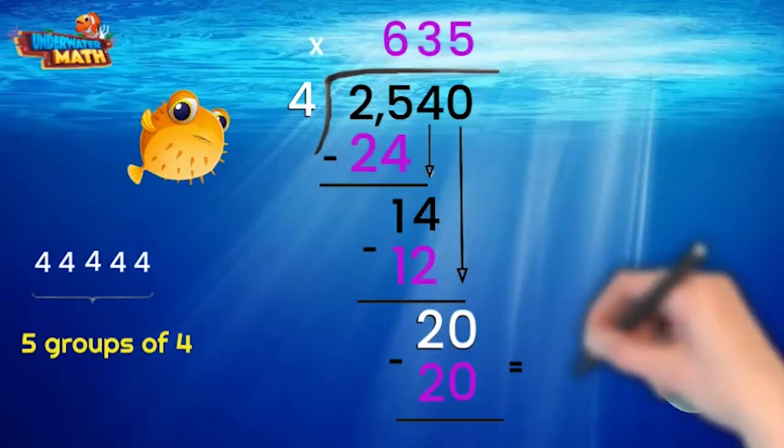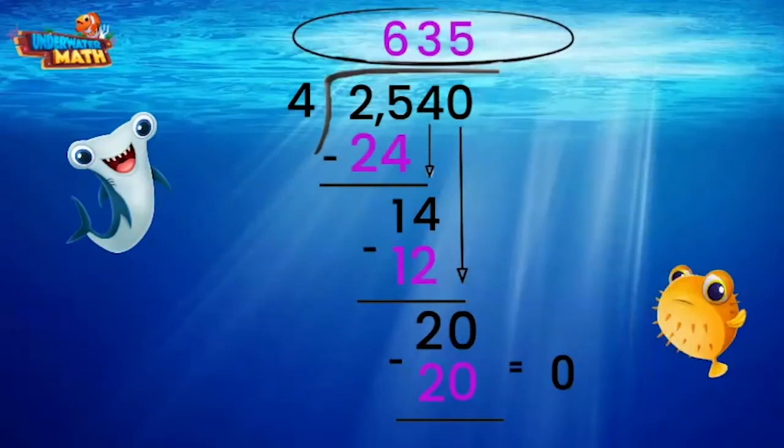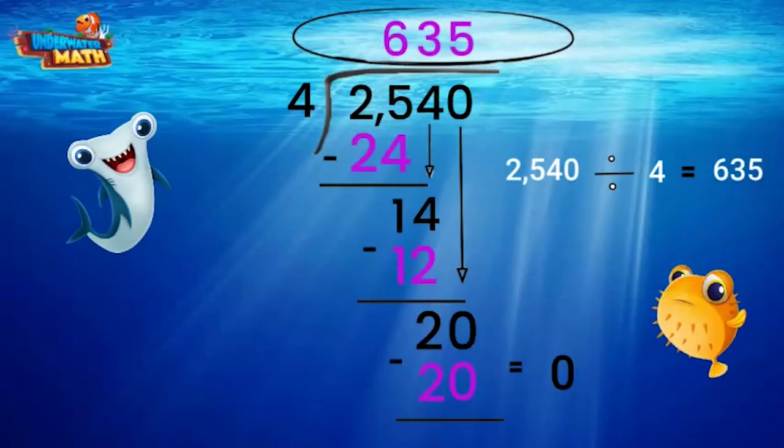we have 0 left over and nothing else to bring down, so we know we are finished. 635 is the answer to our division problem, and long division helped us get there. Stellar job!